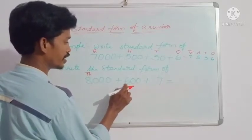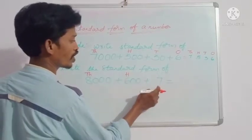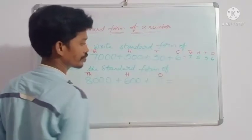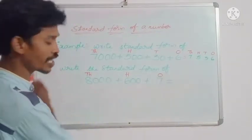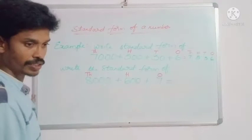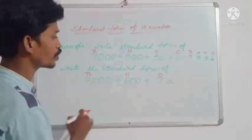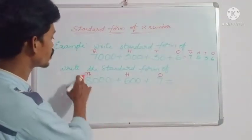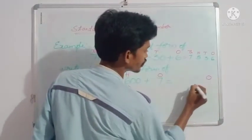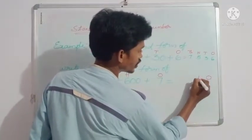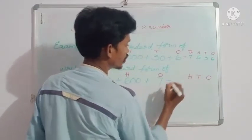Ones, tens, hundreds. What is the last place here? Thousands. Write up to thousands. You have to write the places up to thousands: ones, tens, hundreds, thousands.